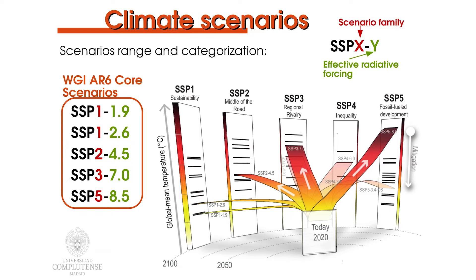The range spans from SSP 1-1.9, which is a highly sustainable scenario with high mitigation policies that holds warming by 2100 to approximately 1.5 degrees Celsius above late 19th century levels, to SSP 5-8.5, which is a strongly fossil fuel development scenario with no additional climate policies. In general, there is no attached likelihood to the scenarios, though both extremes seem less likely while they cannot be ruled out.